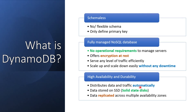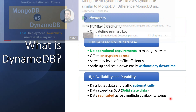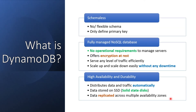DynamoDB distributes data and traffic automatically — we will discuss in coming videos how DynamoDB distributes data and scales up so quickly. Data is stored on solid state disks, which are faster than normal disks, and data is replicated across multiple availability zones for fault tolerance. If you want to know the differences between MongoDB and DynamoDB, there is another video I have recorded just for that comparison, so please feel free to watch it.